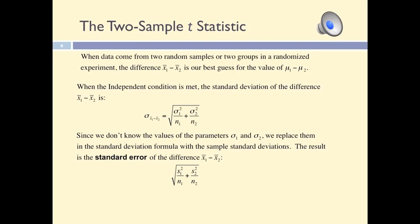In this type of analysis we are interested in making inferences about the difference between two groups, between females and males. We can either compute a confidence interval for this difference, or test whether the difference between the two groups is statistically significant. Because we don't know the two population means mu1 and mu2, we use the sample means to make these inferences, so we are making inferences about the difference x-bar 1 minus x-bar 2.